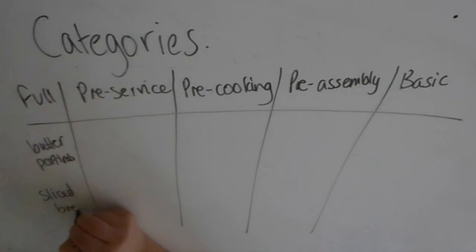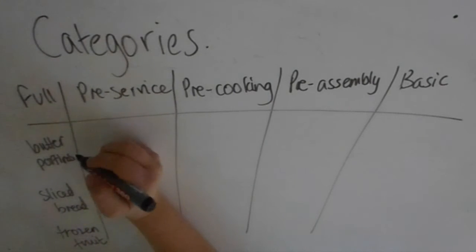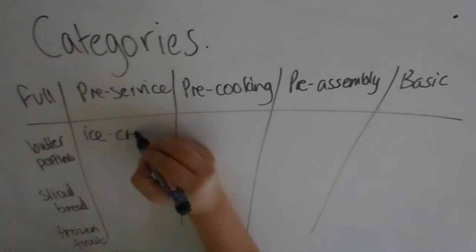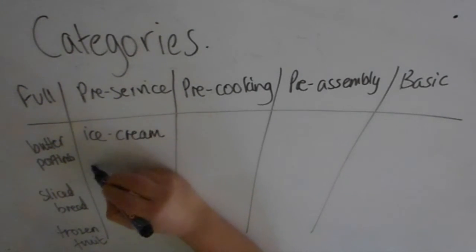Examples of full convenience products include butter portions, sliced bread, and frozen fruit. Butter portions - you know the little ones in a small plastic container with a tin foil lid - you don't have to do anything to them. You could be serving bread rolls, put a butter portion on the plate, and the customer will be able to use it as they need to.